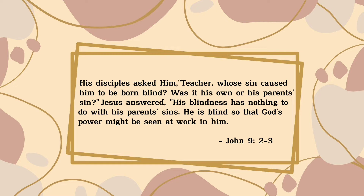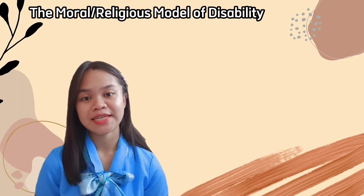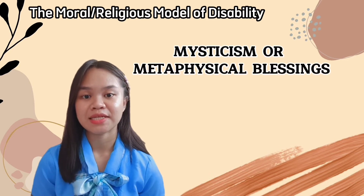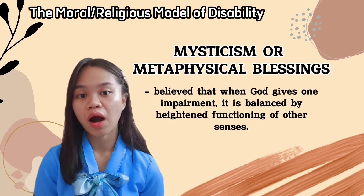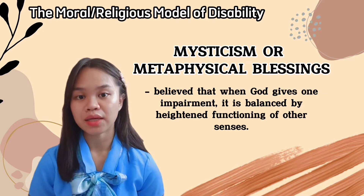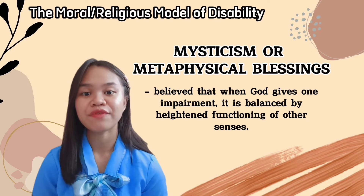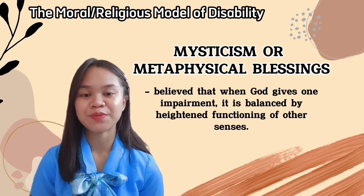According to the book of John 9, verses 2-3, his disciples asked him, 'Teacher, whose sin caused him to be born blind? Was it his own or his parents' sin?' Jesus answered, 'His blindness has nothing to do with his parents' sins. He is blind so that God's power might be seen at work in him.' Another perspective relates disability as metaphysical blessings, where it is believed that when God gave one impairment, it is balanced by heightened functioning of other senses, thus making a person spiritually blessed.